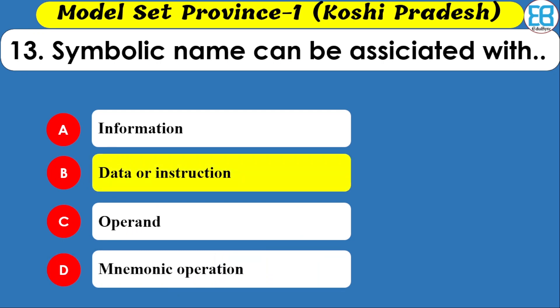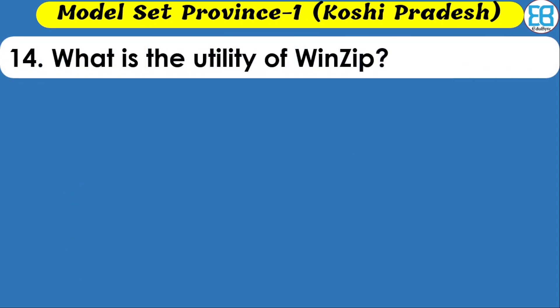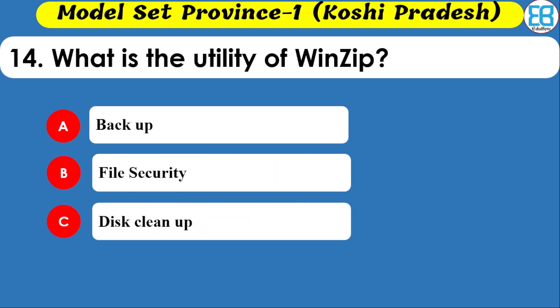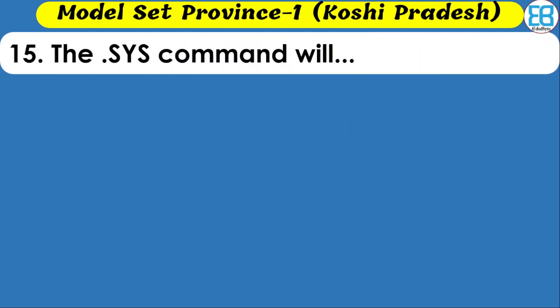What is the utility of the ZIP code? Options are backup, file security, disk cleanup, and file compression. The correct option is file compression — ZIP is used to compress files and reduce size.